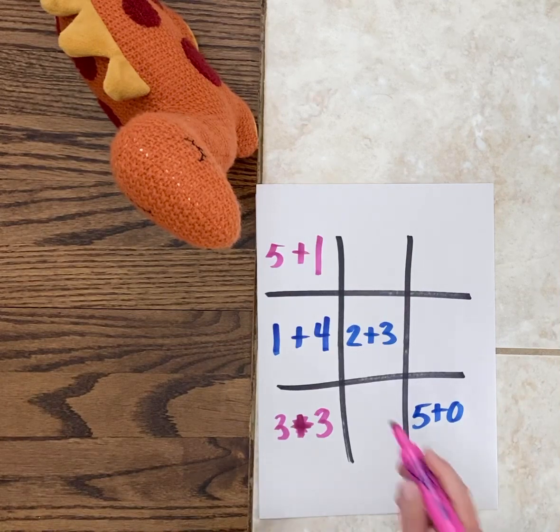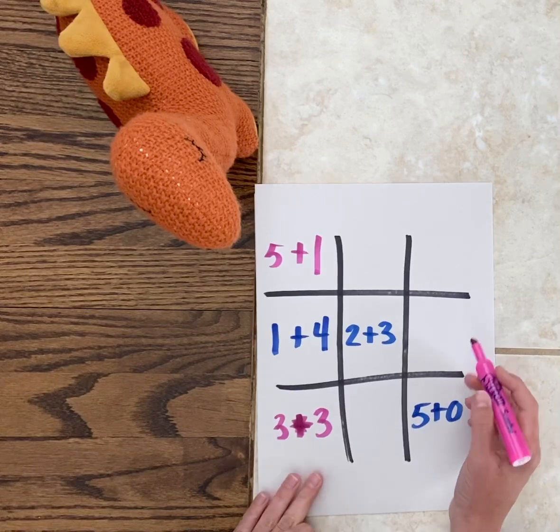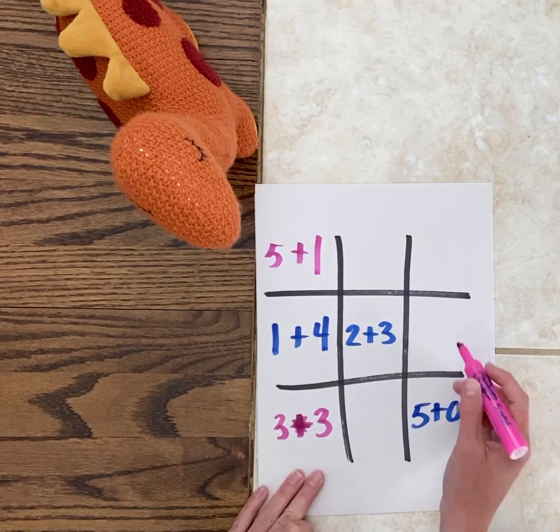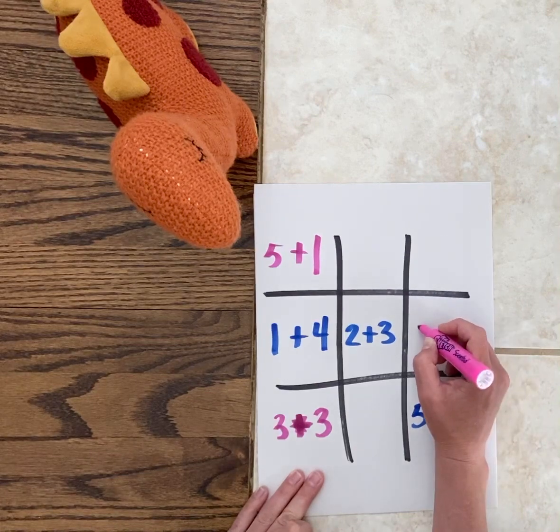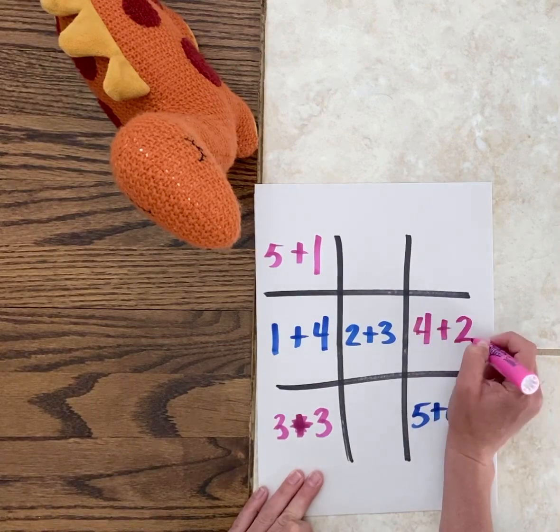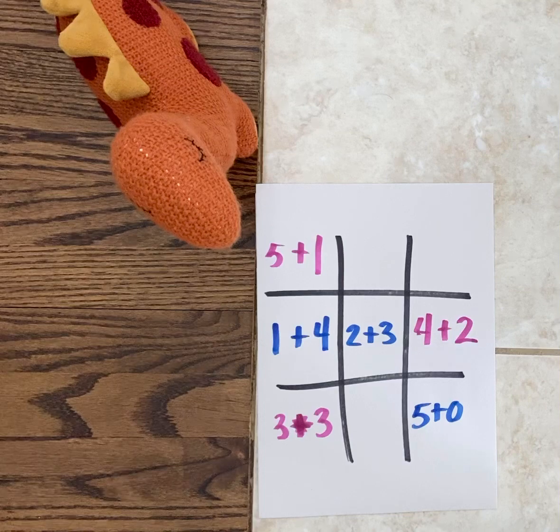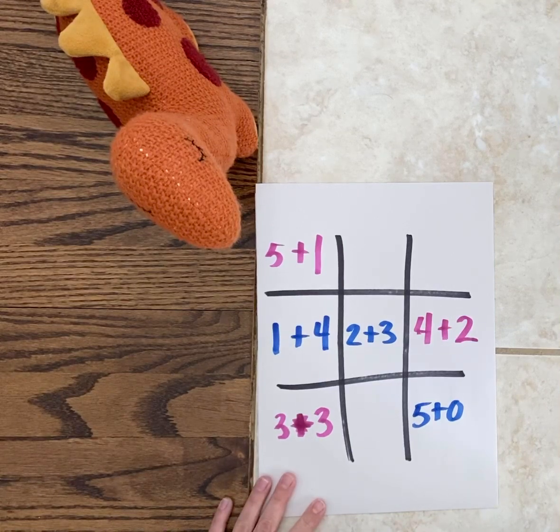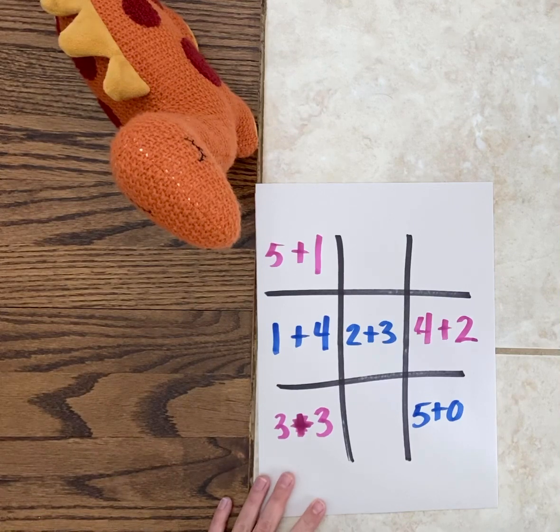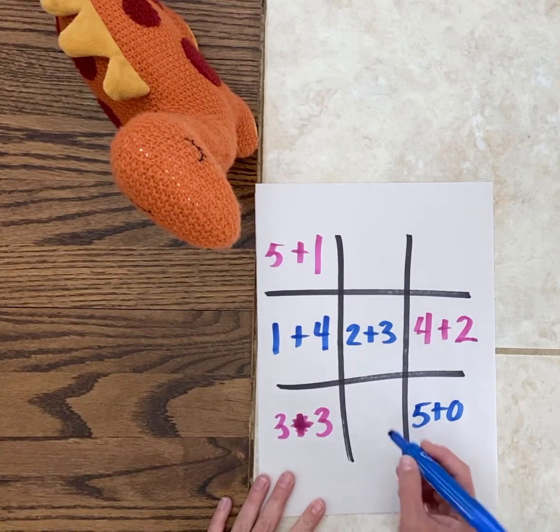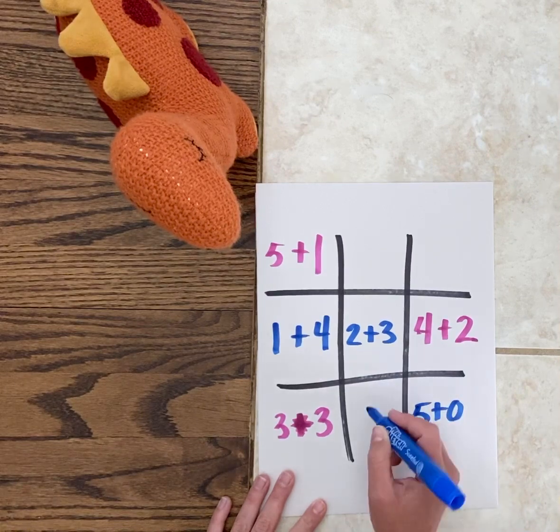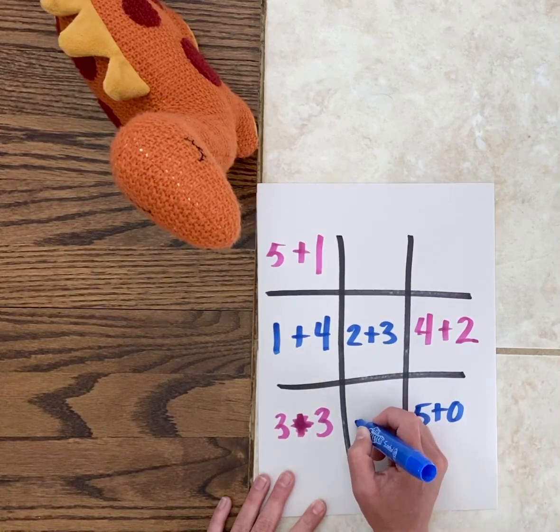Now dinosaur might go here to block me, so dinosaur might do, let's see, four plus two, that equals six. Right, I'm gonna go right here and I'm going to do, let's think, four plus one and reverse this five fact.